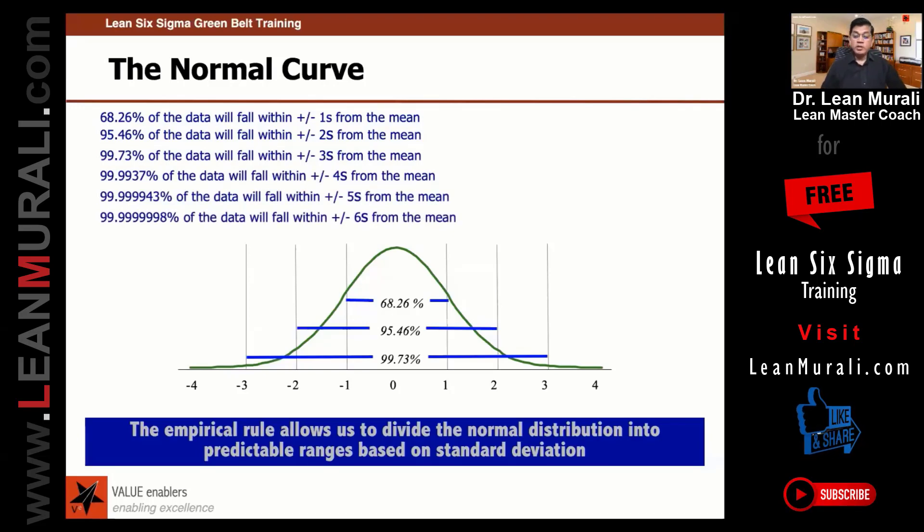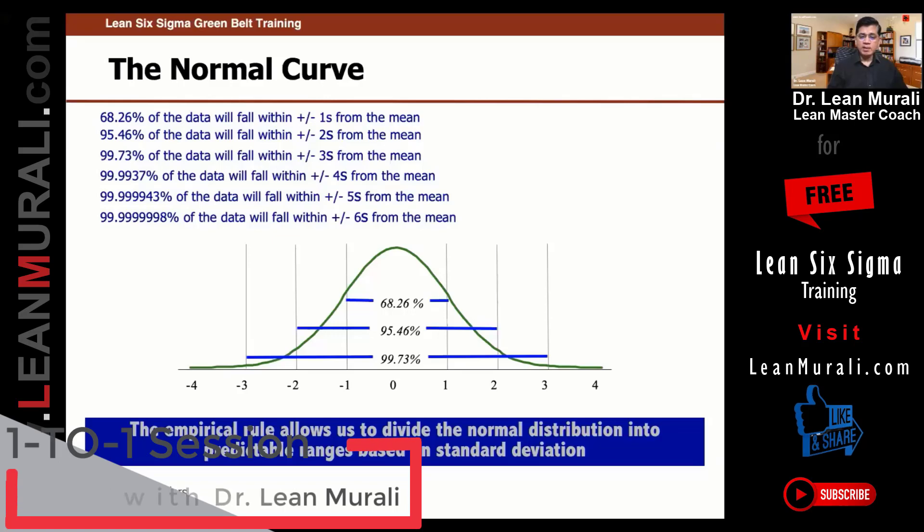If you want it to lie between plus or minus 6 sigma, it should be 99 followed by 1, 2, 3, 4, 5, 6, 9, 7, 8. Now this understanding, you see 2, 3 times for you to be absolutely clear about the nature of a normal distribution, the rule of a normal distribution.